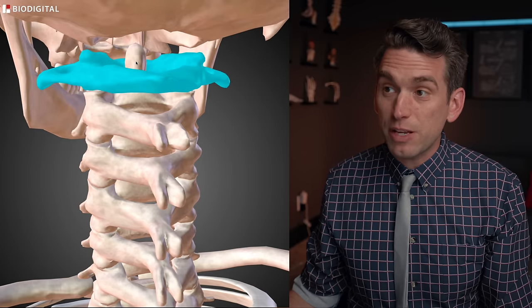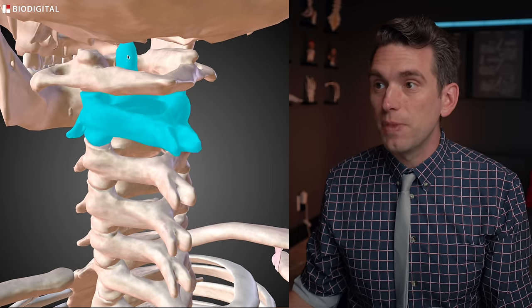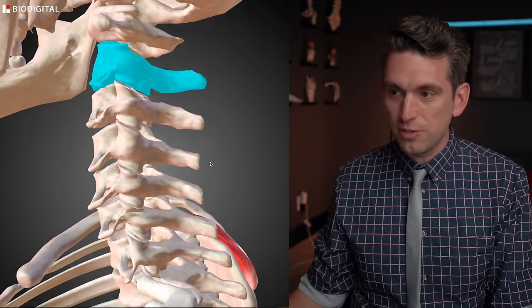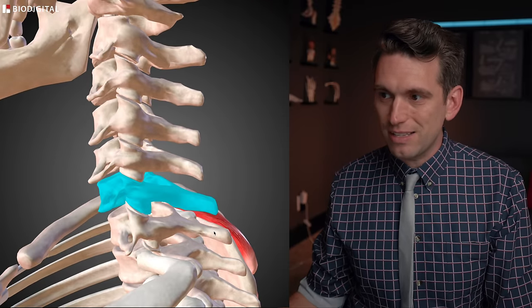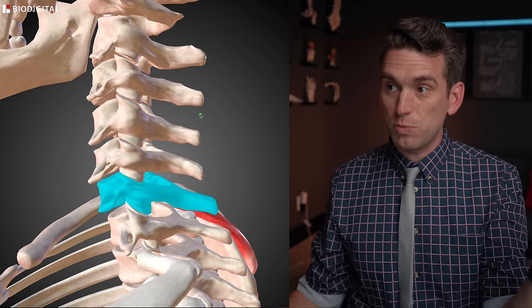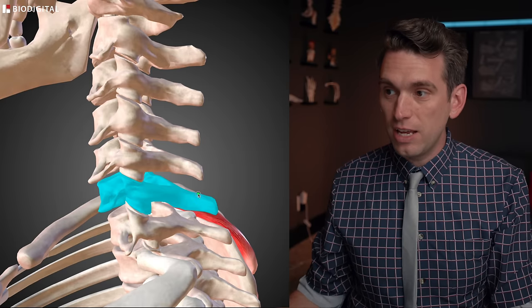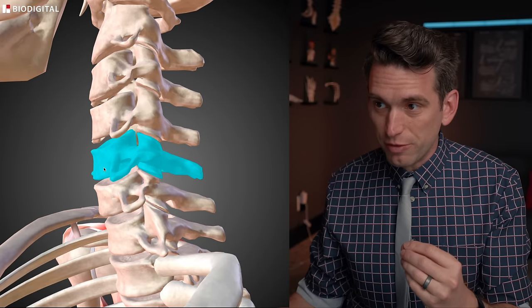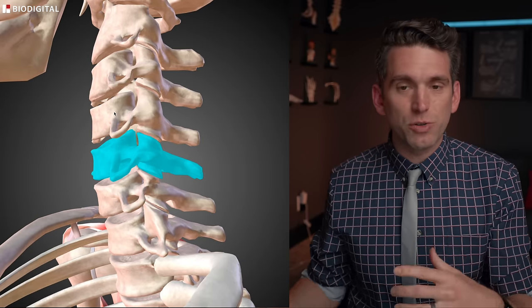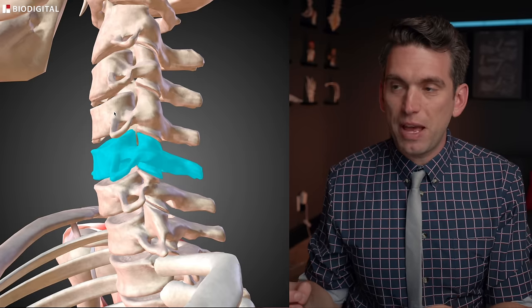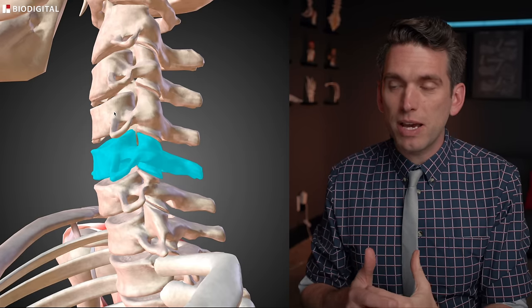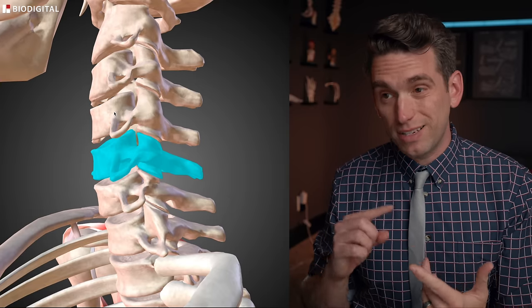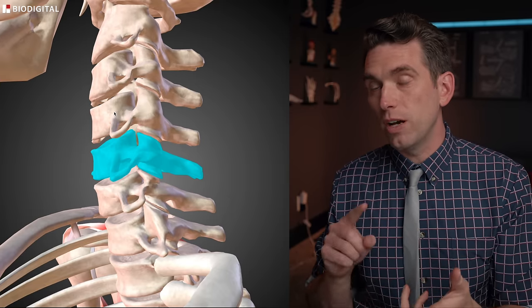And then you can get a hangman's fracture, which is a fracture through this dens here of that C2. A clay shoveler's fracture is a fracture of the spinous process, typically down at C6 or C7, where there's just been excessive hyperextension and you get a crack through that spinous process. But then you can also get a compression fracture of more the vertebral body here in the front. So a lot of different types of fracture patterns, depending on where it's at in the spine, but thankfully it doesn't appear to be in this case, at least highly associated with any sort of a significant spinal cord injury or a blood vessel injury.